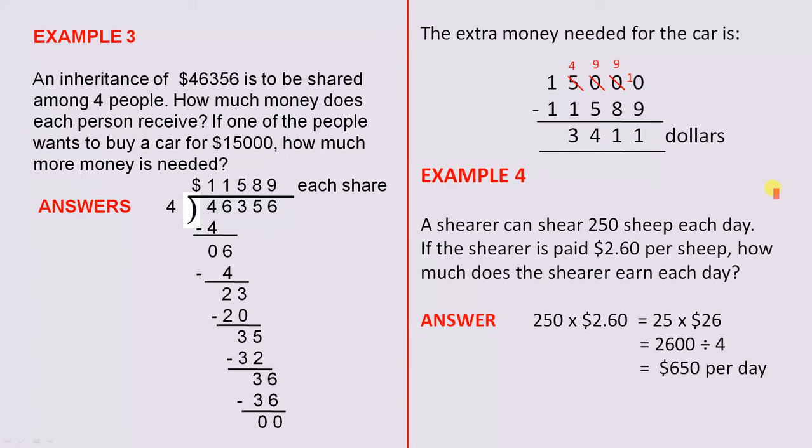Example 4: A shearer can shear 250 sheep each day. If the shearer is paid $2.60 per sheep, how much does the shearer earn each day? So obviously it's multiplication here if you look at it carefully, so it's $2.60 for each of these sheep. So 250 by $2.60.